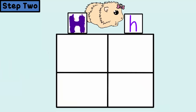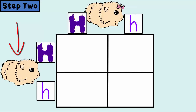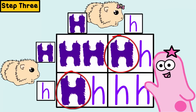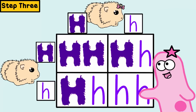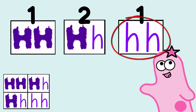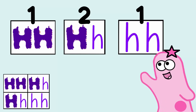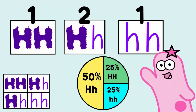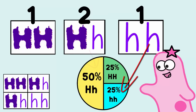Step two: place one parent along the top of the Punnett square, outside of the boxes, and place the other parent along the left side of the square, outside of the boxes. Step three: cross them. For formatting purposes, we always put the capital letter first. The results in the squares represent the offspring — the babies. The genotypes of the babies are: one capital H, capital H; two capital H, lowercase h; and one lowercase h, lowercase h. That gives a genotype ratio of 1 homozygous dominant to 2 heterozygous to 1 homozygous recessive, or 25% homozygous dominant, 50% heterozygous, and 25% homozygous recessive.